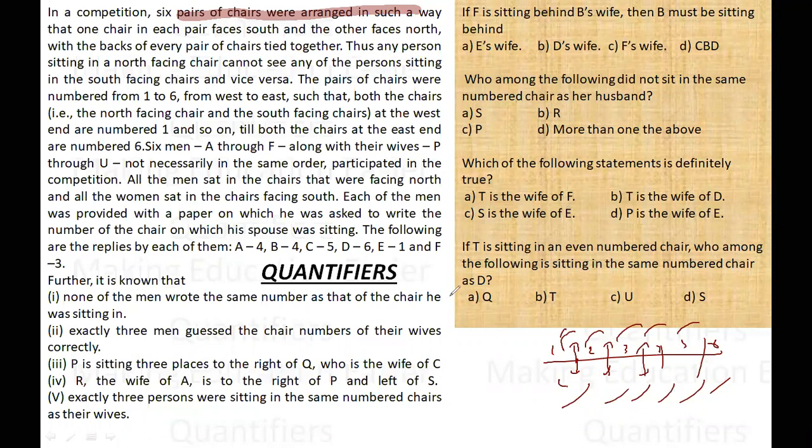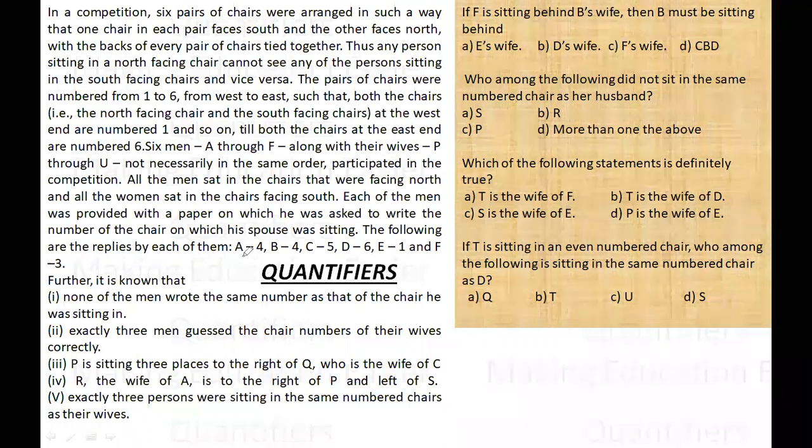Each of the men was provided with a paper on which he was asked to write the number of the chair - he basically had to guess the chair at which his spouse was sitting. Now these are the guesses made by the men. If you have not practiced such type of sets, then it is a four out of five for you, otherwise it is 3.5 out of five, and the optimum time to do this set is eight to ten minutes.